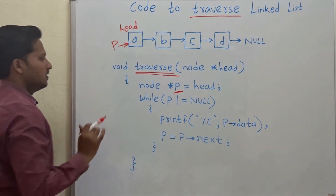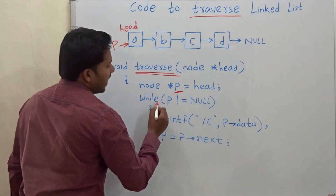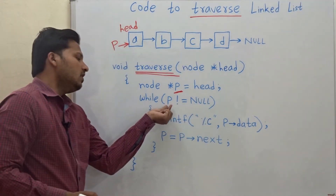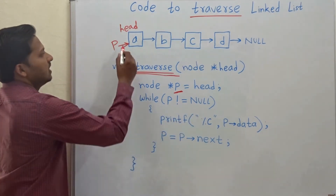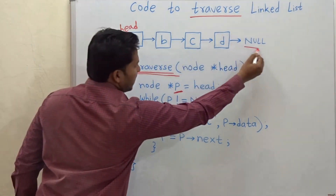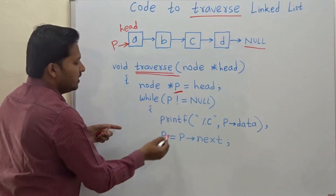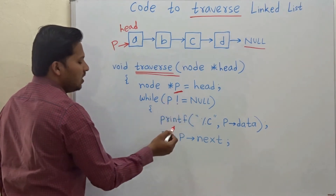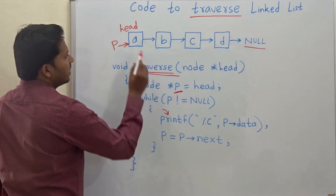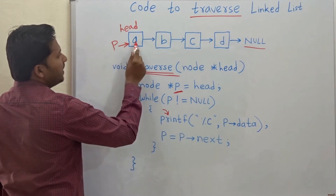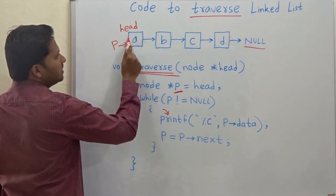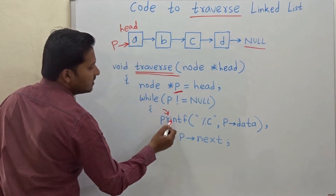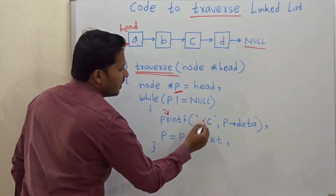In the while loop, we check: while p is not equal to null — meaning till the end of the linked list — we keep iterating. As long as p points to a node that is not null, the node exists, and we go inside this while loop.